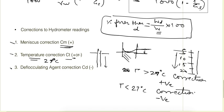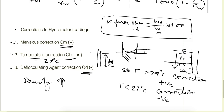The deflocculating agent correction is always negative. When a deflocculating agent is added to the liquid, the density of the liquid increases. In a normal liquid the hydrometer reaches depth H, but with increased density it comes to a lesser depth, giving a bigger reading value. Therefore we must subtract the deflocculating agent correction.